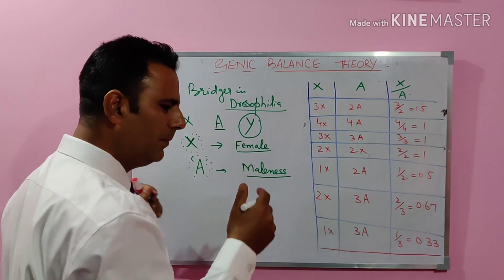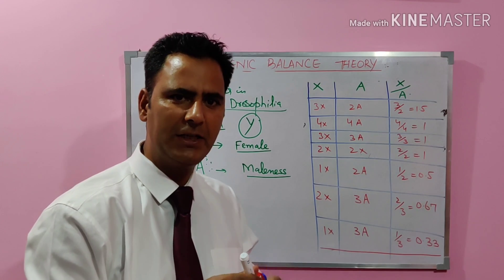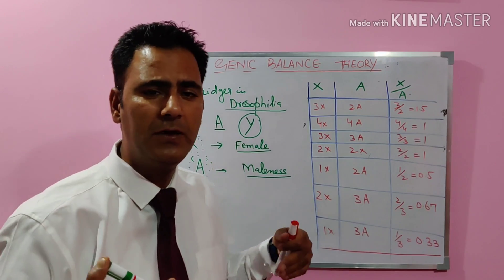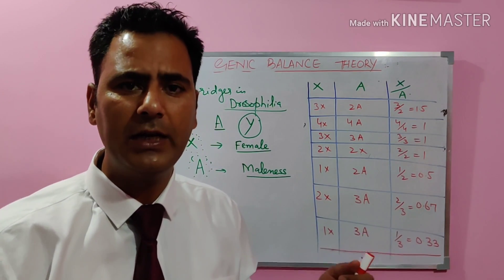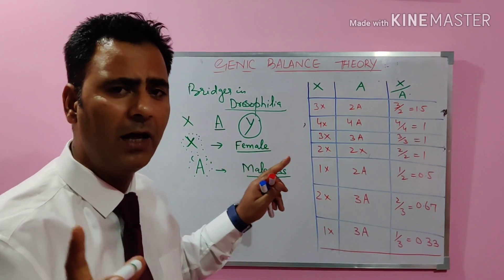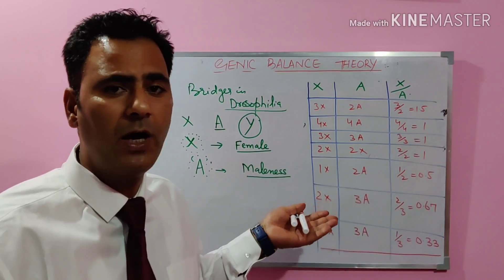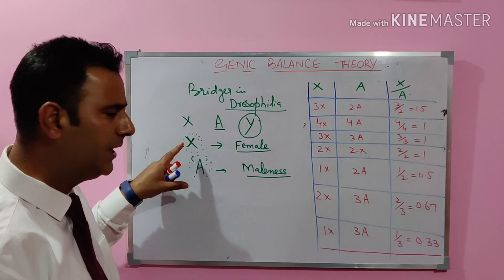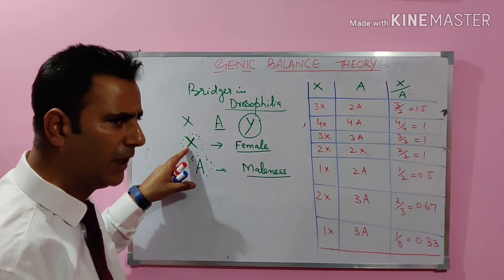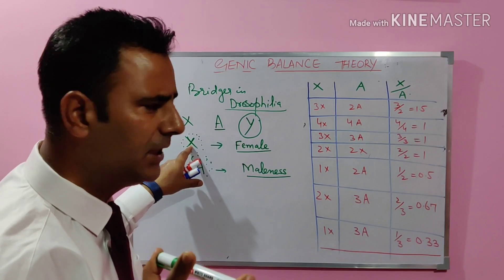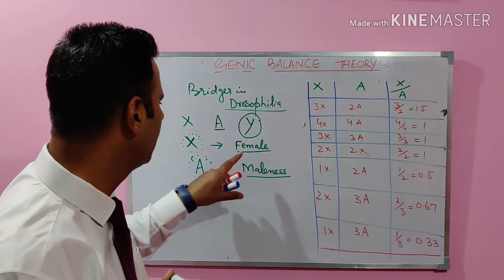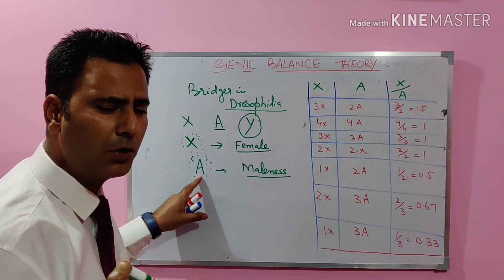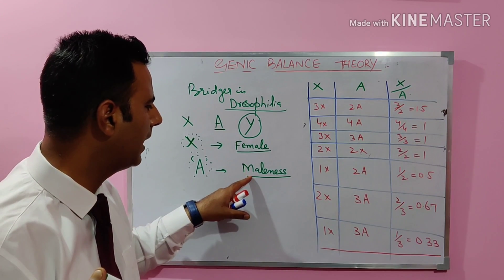This is something strange, because in our previous lecture we discussed that it is the X and Y mechanism which determines whether an individual is male or female. But here, we are not giving any importance to Y, because Y is not determining maleness or femaleness. It is the genes on the X chromosome and on the autosomes that matter.